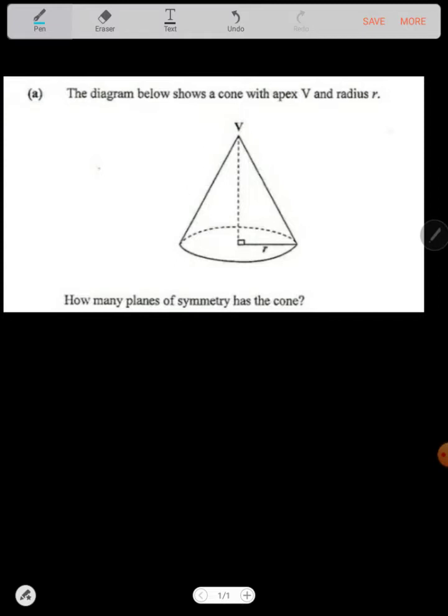We talked about planes of symmetry being lines of symmetry over a 3D object. Now, because it has got a circle, a circle can have as many planes of symmetry as it can.